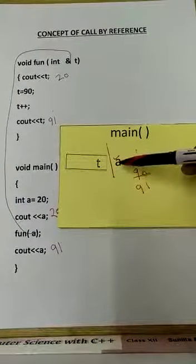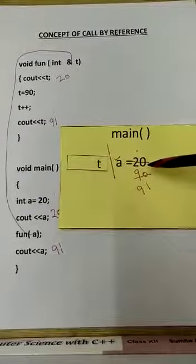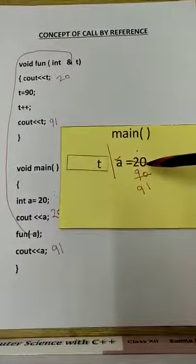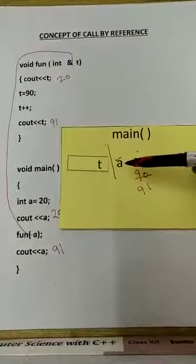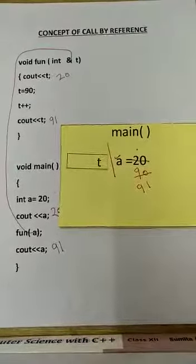Because actual argument and formal argument both represent one memory location, therefore any change in formal is automatically reflected in actual. This is the concept of call by reference.